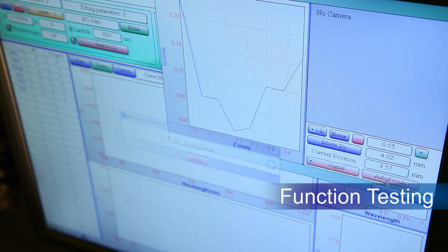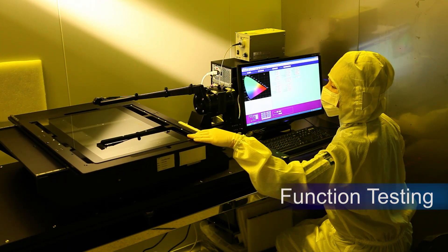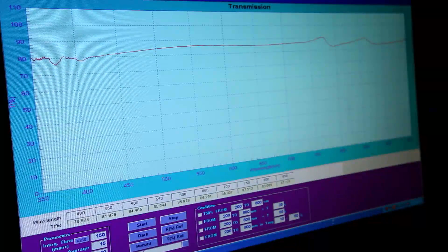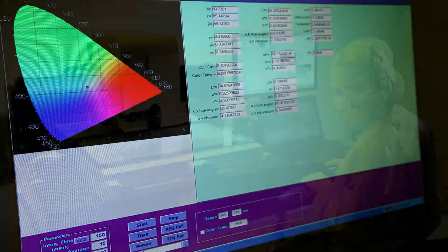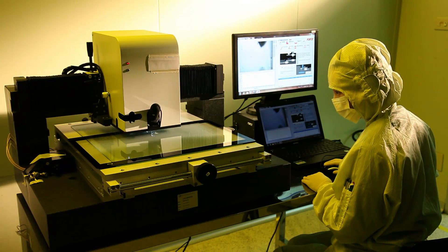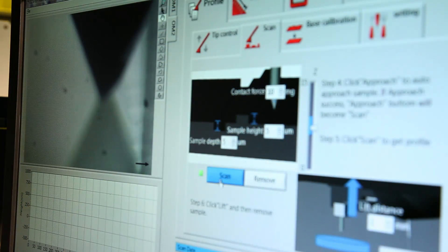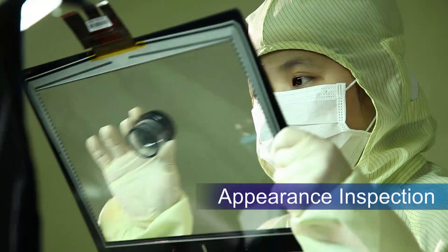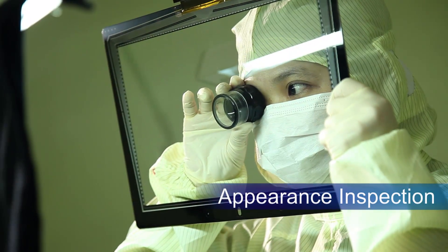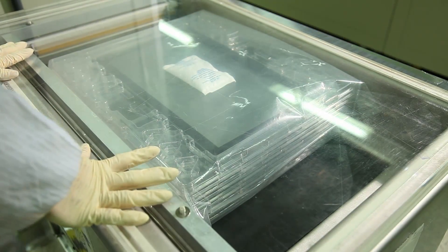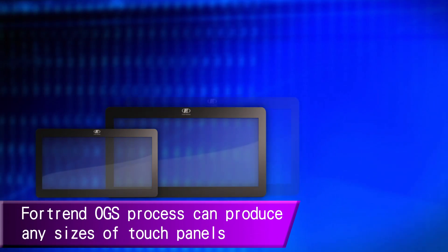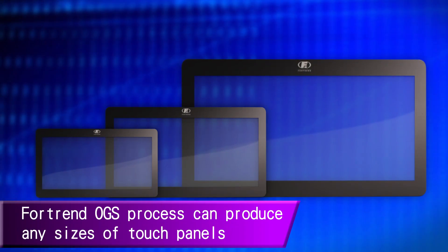100% function test ensures our panel works and fits our customer's requirement. Our OGS manufacturing yield rate is up to 90% and above, higher than the other technologies. Fortran OGS process can produce any sizes of touch panels.